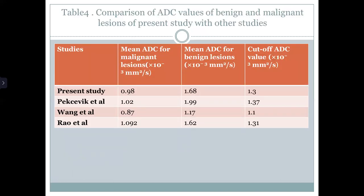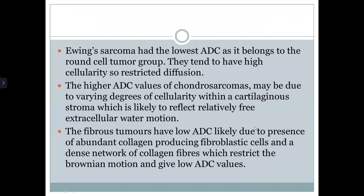This table compares ADC values of benign and malignant lesions of our study with other studies. Our study gives an ADC cutoff of 1.3. Takovic et al. gave 1.37, Bang et al. gave 1.1, and Rau et al. gave 1.31. Ewing's sarcoma had the lowest ADC as it belongs to the round cell tumor group and tends to have high cellularity, causing restricted diffusion.